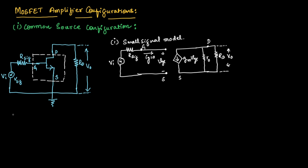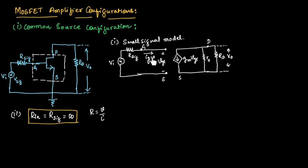In the second step, we find the input resistance and output resistance. The input resistance R_in equals R signal, which equals infinity. Resistance is voltage divided by current; since gate current is considered zero, resistance equals V0 divided by zero, which is infinity. For any configuration with gate as input, input resistance is infinity because the current across the gate is considered zero.